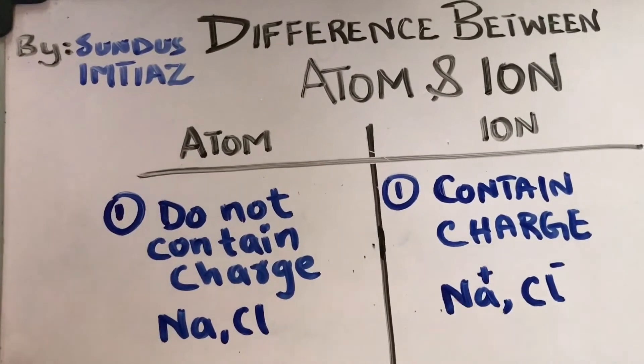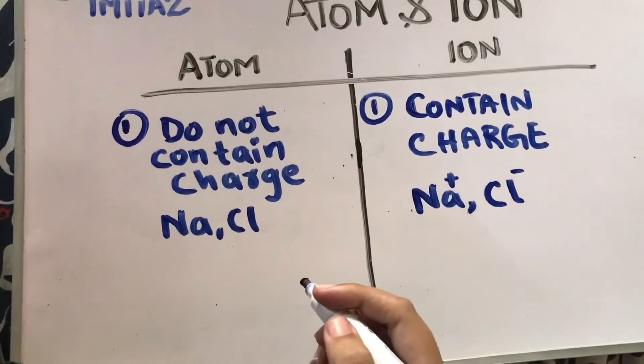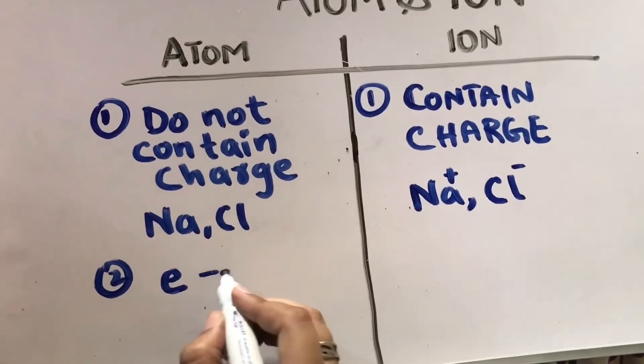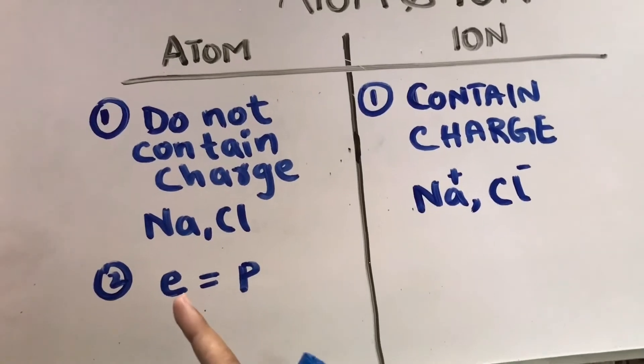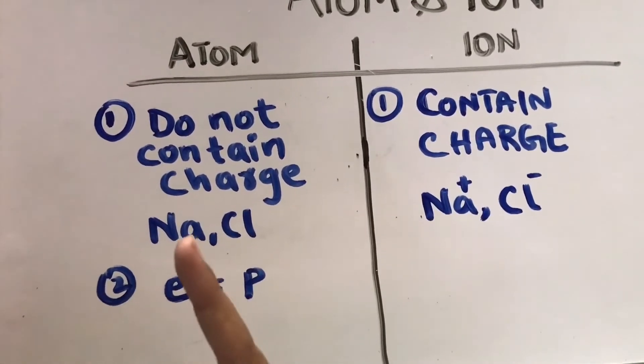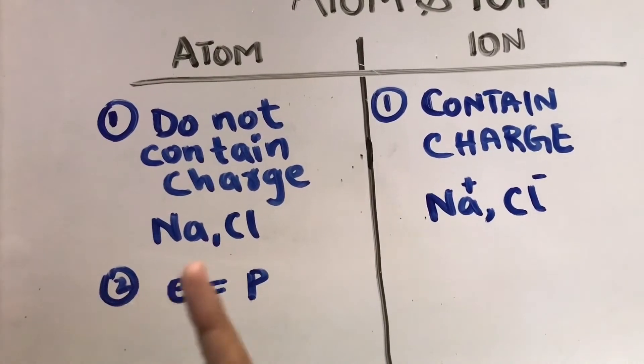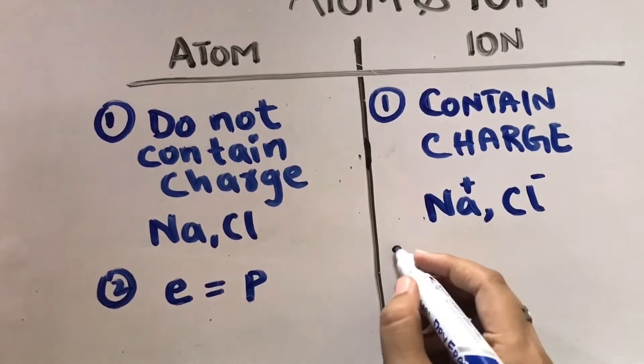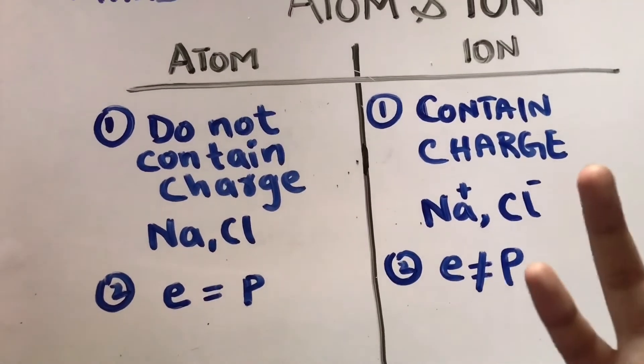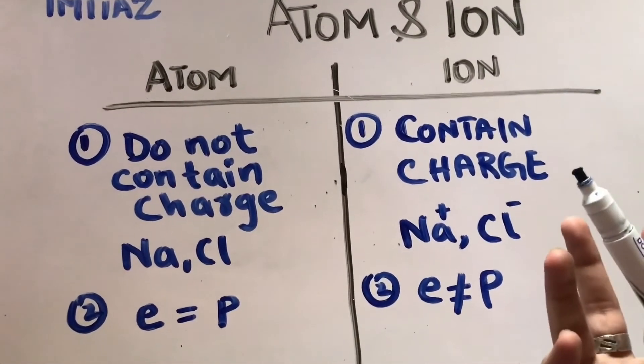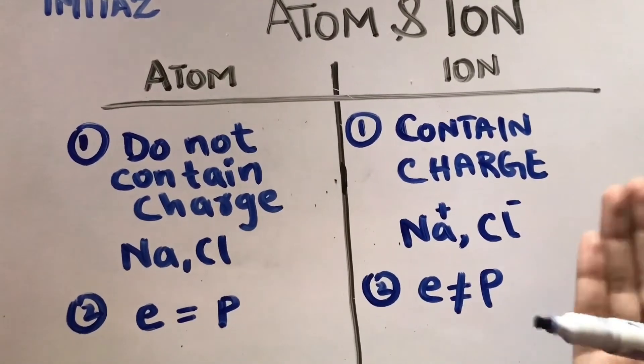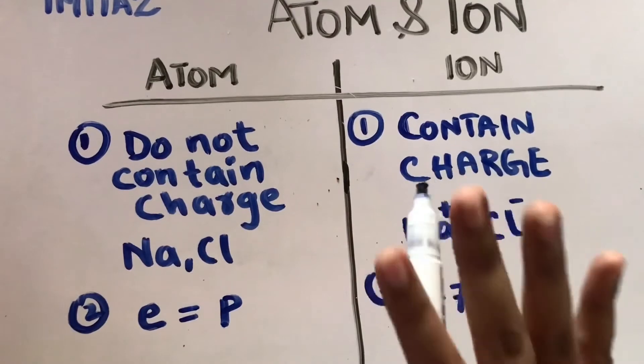Then we go to second difference. The second difference tells us that in atoms, electron number is equal to the proton number. If we talk about neutral particles like sodium or Cl, you can check that they both contain same number of electrons and same number of protons. If we talk about ion, they do not contain equal number of protons and electrons because if there are positive signs, of course when electron is lost, and negative signs when electron is gained